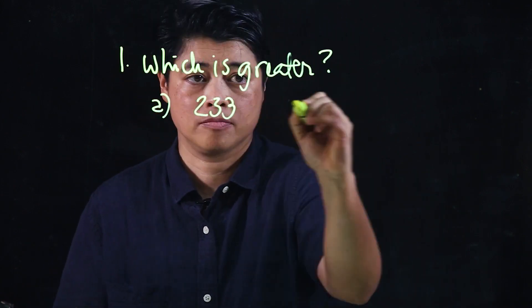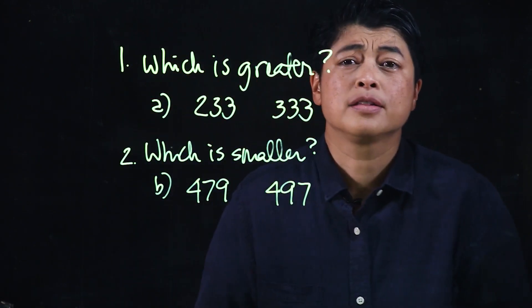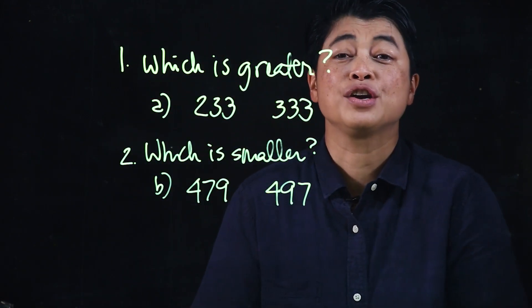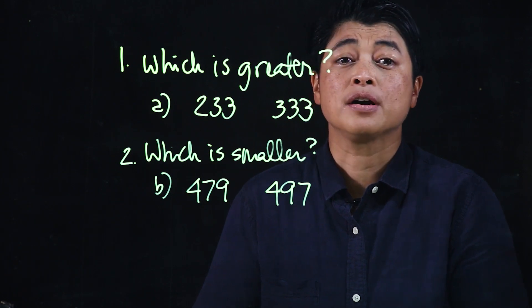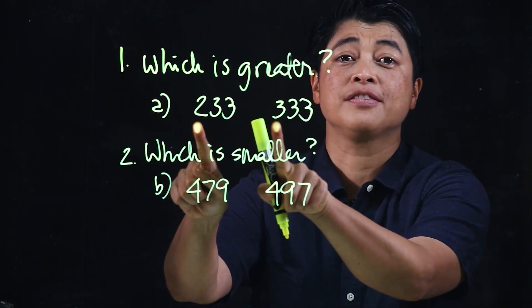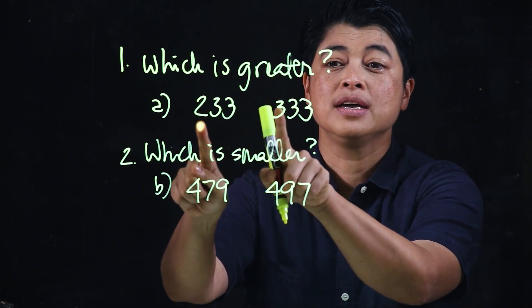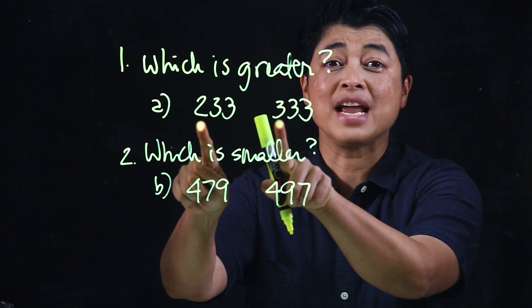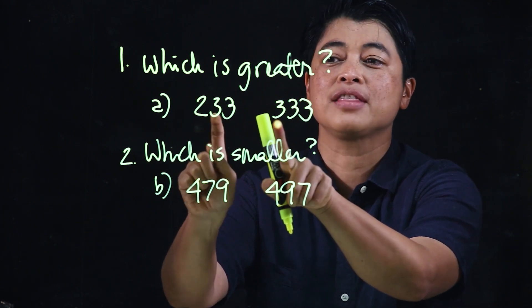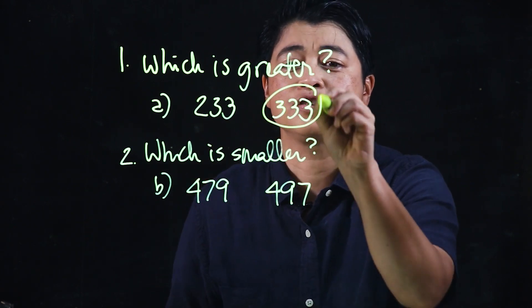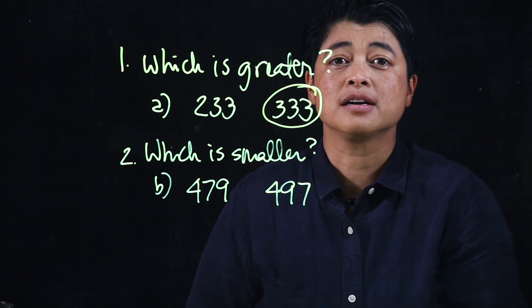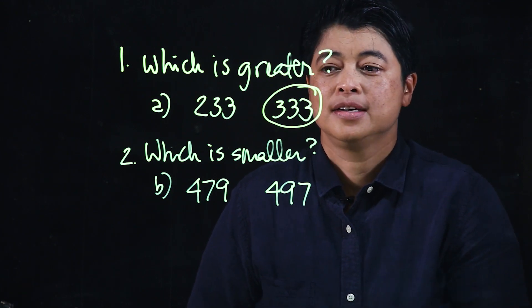As an example on page 15, the problem says 'which is greater?' When comparing, we start with the hundreds place first. According to the hundreds place, this is 2 and this is 3. Since 3 is greater than 2, this number is greater — no need to look at the rest of the digits.